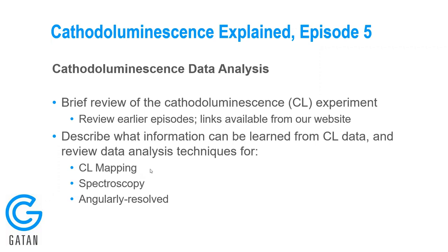The three types are: CL mapping, which is an intensity map; spectroscopy, or spectroscopic information where we look at spectra from a sample; and angularly resolved information, where we look at the angles that light leaves a sample surface.